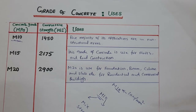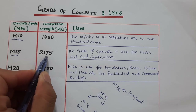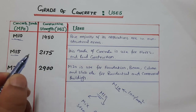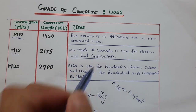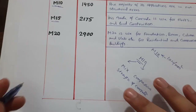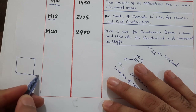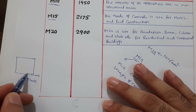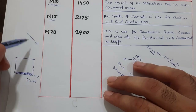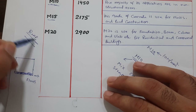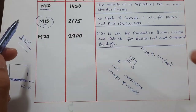The next grade is M15. Its compressive strength in PSI is 2175 pounds per square inch. M15 grade of concrete is used for floors and road construction — for example, the floor slab of a room or general road surfaces.